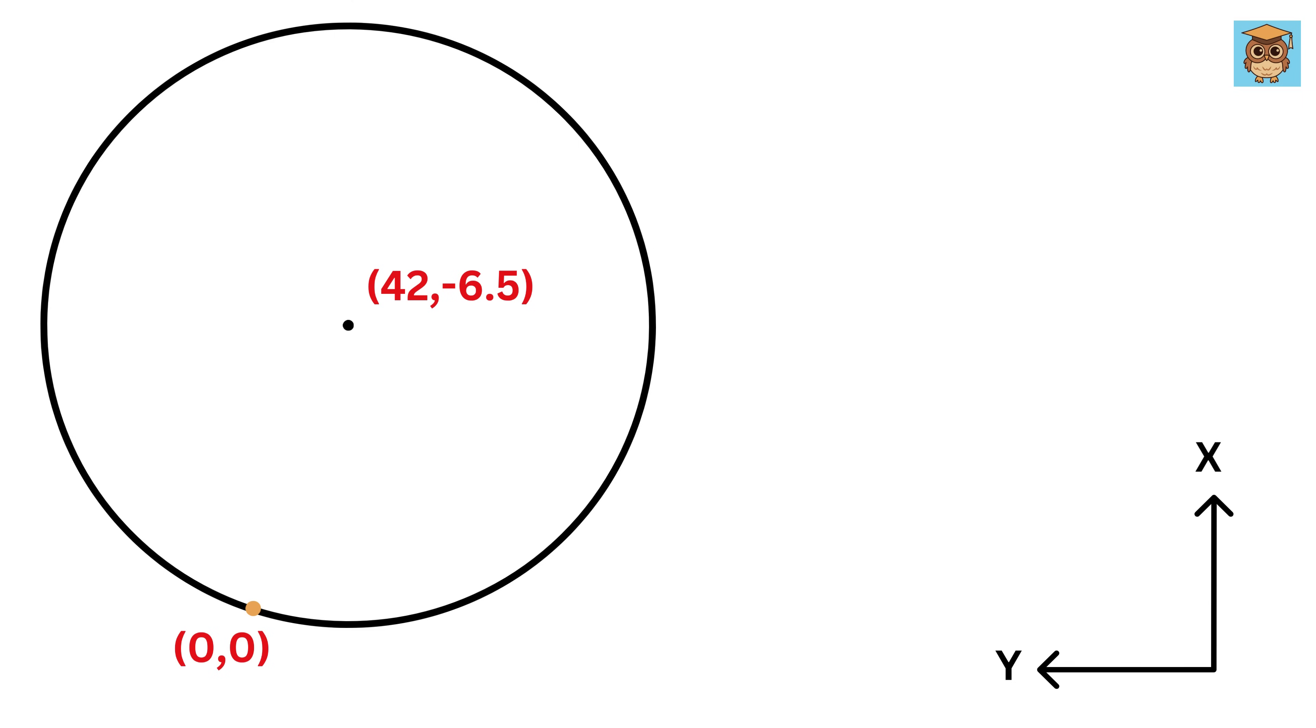Now finding the radius is super easy, as it will be equal to the distance from the center to the origin. So we will use the distance formula. This becomes the square root of 42 squared plus minus 6.5 squared.